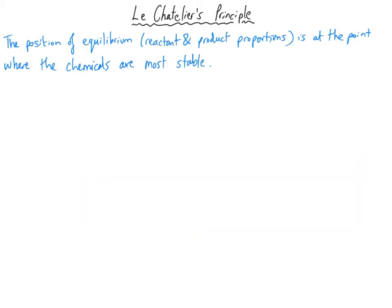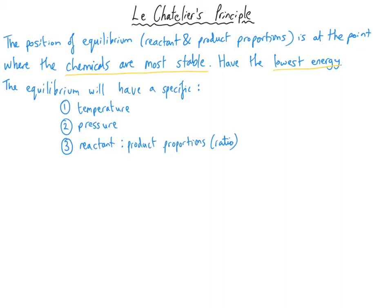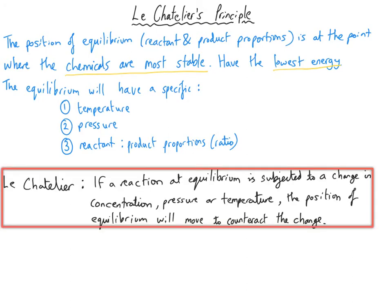The position of equilibrium — the proportions or ratios of reactants to products — is at the point where the chemicals are most stable, meaning they have the lowest energy. At equilibrium there will be an optimum temperature, pressure, and other conditions. Le Chatelier's principle states that if a reaction at equilibrium is subjected to a change in concentration, pressure, or temperature, the position of the equilibrium will move to counteract the change.